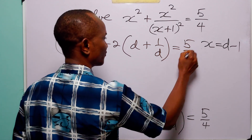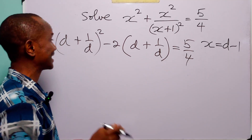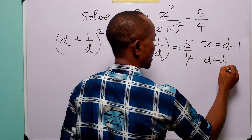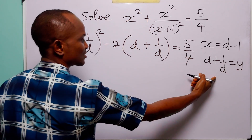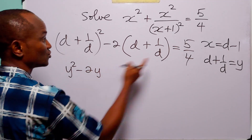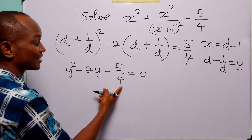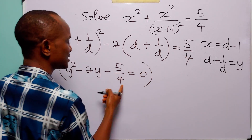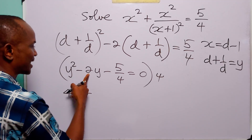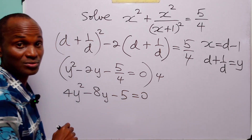Everything is still equal to 5 over 4. When you look at this you will immediately see that this is a quadratic equation in d plus 1 over d. So let d plus 1 over d be equal to y. With this substitution the equation becomes y squared minus 2y minus 5 over 4 equals 0. To get rid of the fraction, we multiply through by 4.